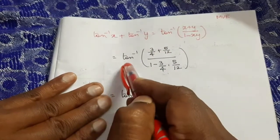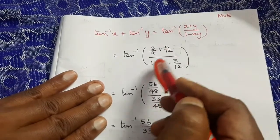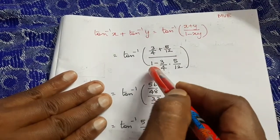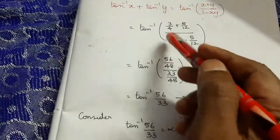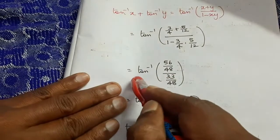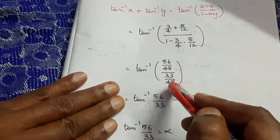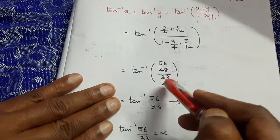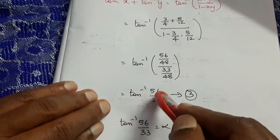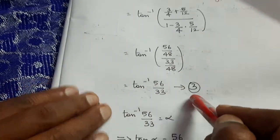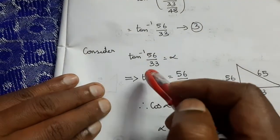Substituting: tan⁻¹((3/4 + 5/12) / (1 − (3/4)·(5/12))) = tan⁻¹((56/48) / (33/48)) = tan⁻¹(56/33).